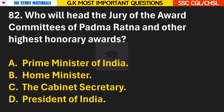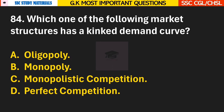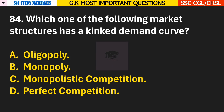Question 82: Who will head the jury of the award committees of Padma Ratna and other highest honorary awards? Answer C — The cabinet secretary. Question 83: District judges in a state are appointed by the? Answer B — Governor of a state. Question 84: Which one of the following market structures has a kinked demand curve? Answer A — Oligopoly.